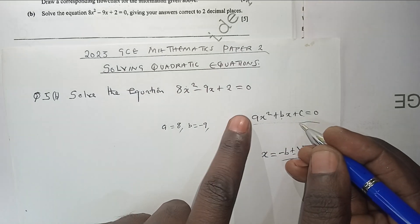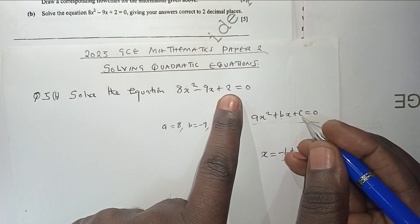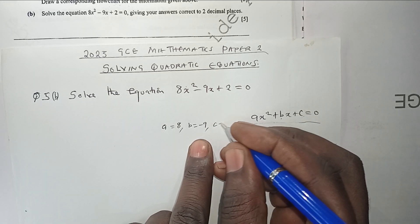And then also by comparison, we can see that the coefficient here is positive 2. Then here we have c. So we are saying c is equal to 2.